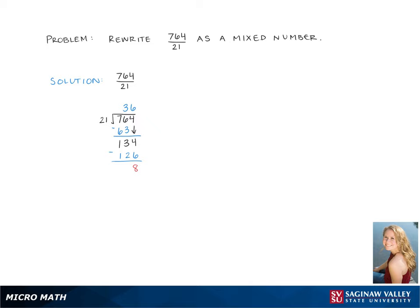We're going to use these numbers for our mixed number. So 764 over 21 equals, and our whole number in the mixed number is the whole number we got from long division, which was 36.